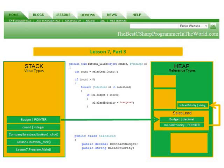Value types are stored on the stack - variables like integers, longs, characters, decimals, bools - basically anything that is derived from the System.ValueType library.